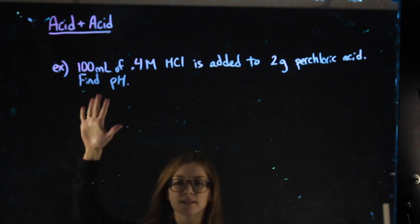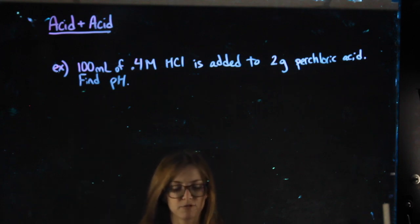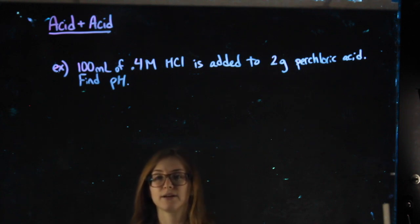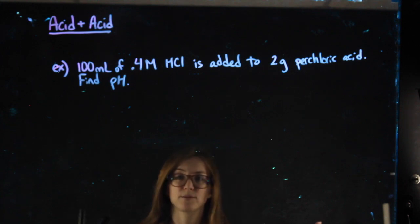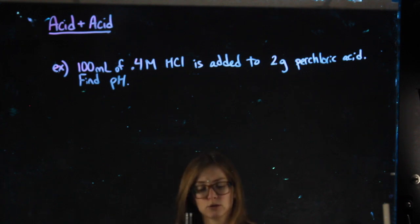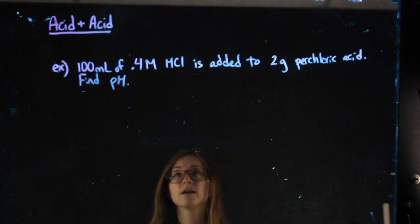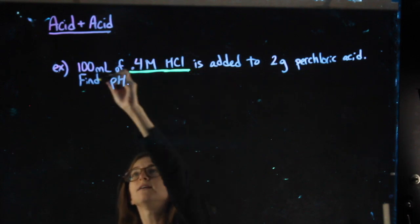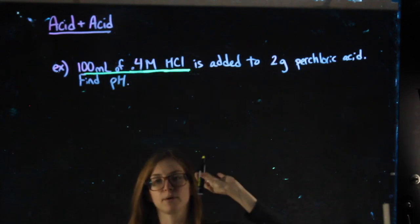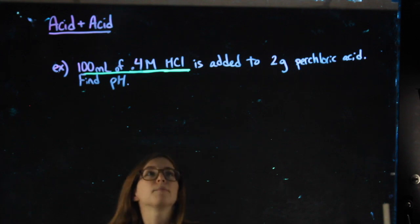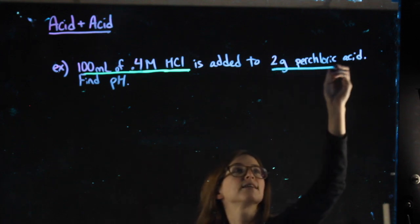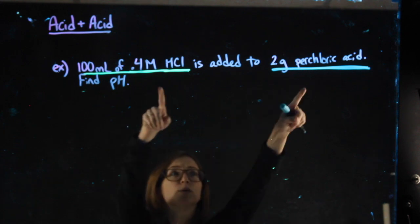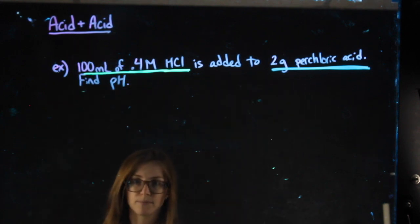All right, acid plus acid problems. For it to be an acid plus an acid problem, we have to have one acid and another acid that we're combining. So it's not a reaction that's happening here, but we do have HCl. There's one acid, underlining everything about it. I'm going to color code for you. And we also have perchloric acid. That's another acid. So we have these two acids being added together. It's an acid plus acid problem.